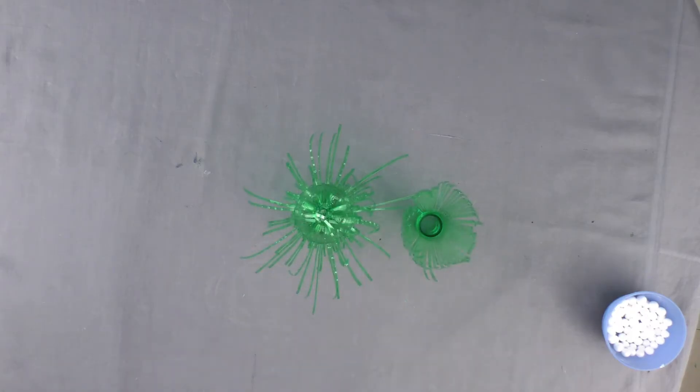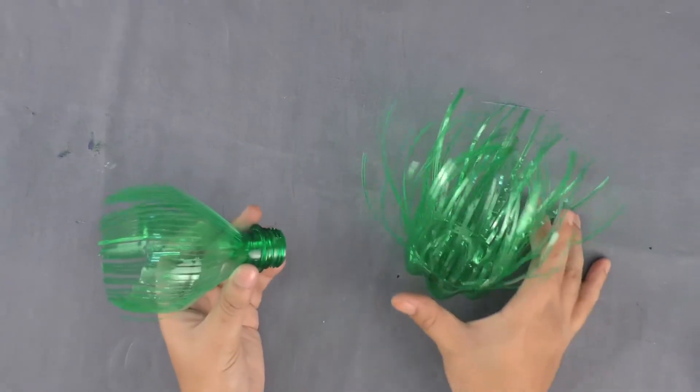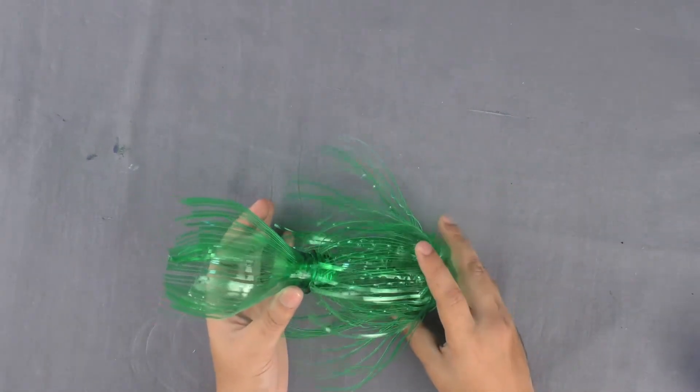This way you have two shredded parts of the cola bottle. Now insert the top part into the lower part of the bottle.